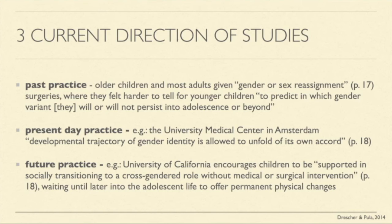There are three current directions of study. The past practice is that older children and most adults were given gender or sex reassignment surgeries, as it was harder to predict outcomes in younger children regarding whether they would persist or desist. The present-day practice, such as at the University Medical Center in Amsterdam, is a developmental trajectory of gender identity which they allow to unfold on its own. The future practice, at the University of California, encourages children to be supported in socially transitioning without medical or surgical intervention until later in adolescent life, when permanent physical changes can be offered.